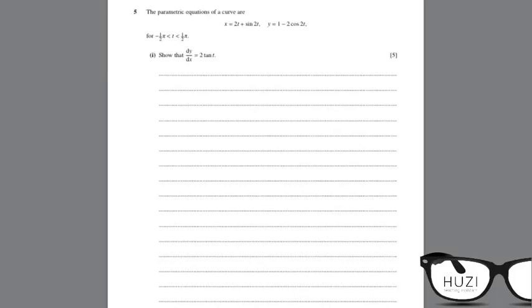Question number 5. The parametric equations of a curve are x equals 2t plus sin 2t, y equals 1 minus 2 cos 2t. So this is a parametric differentiation question.